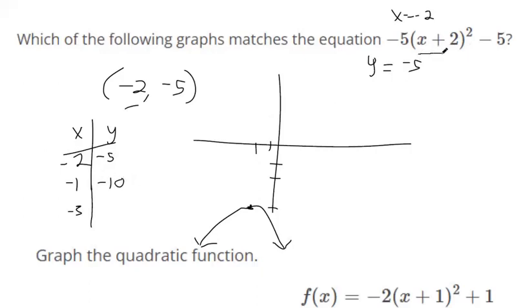If you plug in negative three, negative three plus two is negative one. Negative one squared is one. One times negative five is negative five. Negative five... you get the same thing on either side. So you should see dots at negative one and at positive one down at negative ten on the Y axis.